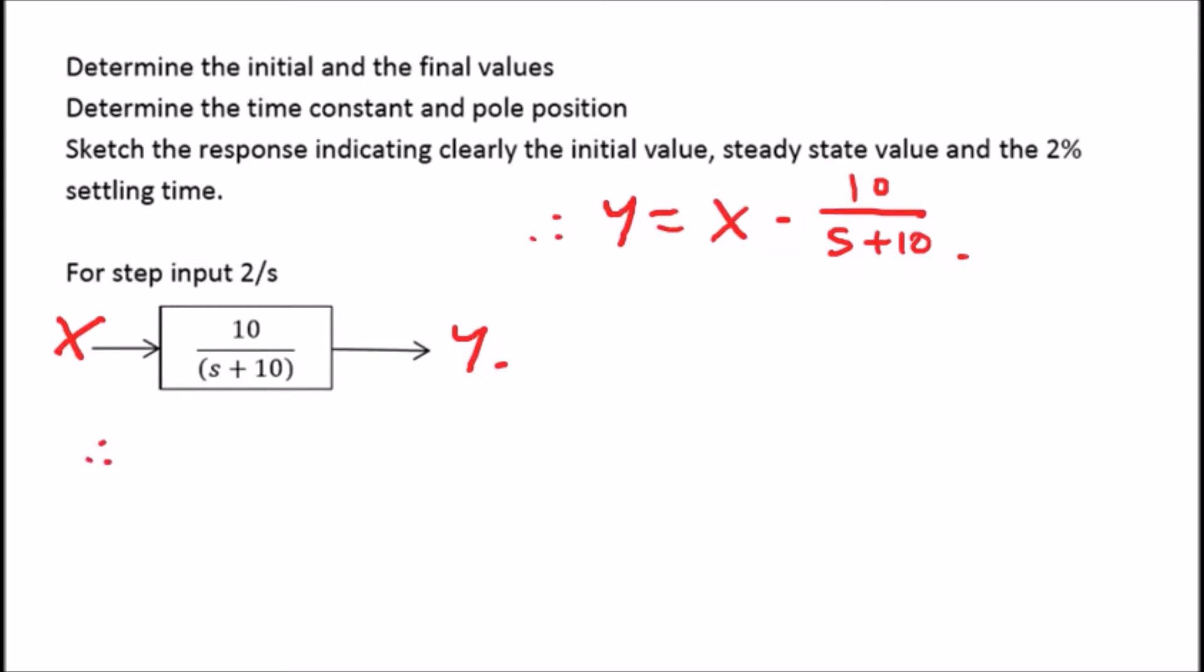So the initial value theorem is going to be the limit as s tends to infinity of s times x, which is 2 over s, times the transfer function, 10 over s plus 10. Tidying this up, this is the limit as s tends to infinity - the s will cancel, so we get 20 over s plus 10.